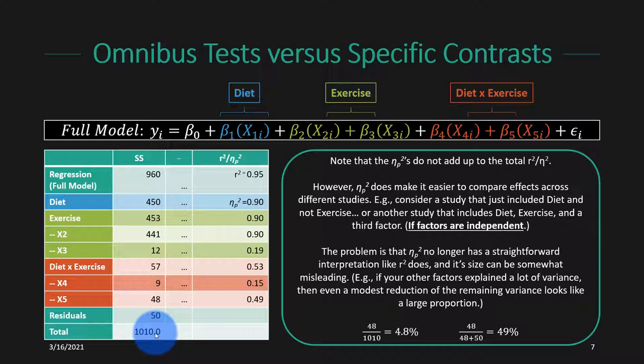By standardizing effect sizes this way, you can make it mathematically simpler to compare effect sizes across different studies. Although you run into conceptual issues — is it an apples-to-oranges comparison? I might operationalize diet one way in my study while someone else has a very different manipulation of diet, so it may not be appropriate to compare the two effect sizes even if mathematically you can. But the problem with this added flexibility is that partial eta-squared no longer has a straightforward interpretation the way r-squared does. R-squared tells us the proportion of variance in Y explained by X — it's abstract but pretty straightforward.